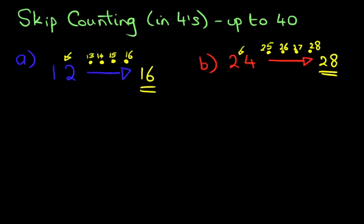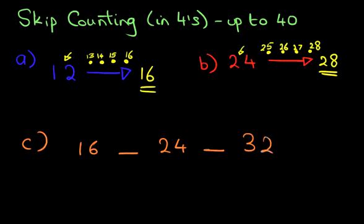Okay. We are going to look at one final example. This time it is going to be a slightly different question. We have got 16, blank, 24, blank, 32. So we have got three numbers and we have got two blank numbers. We have to fill in the blanks. One, two. And we are counting in fours.